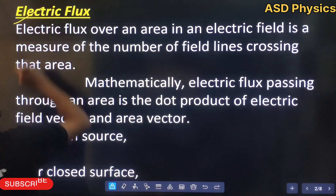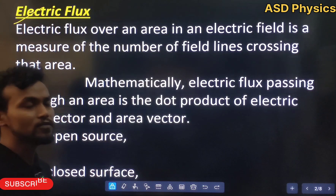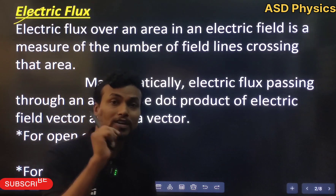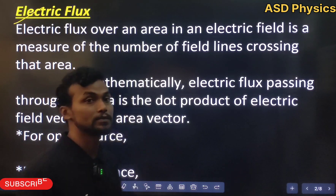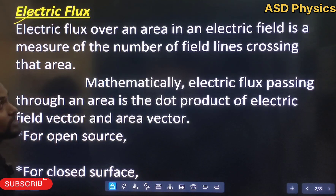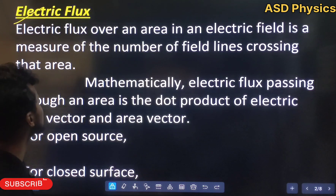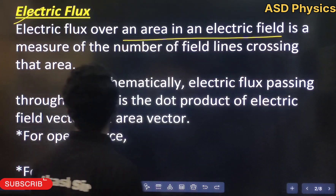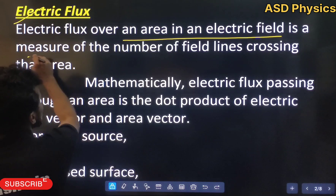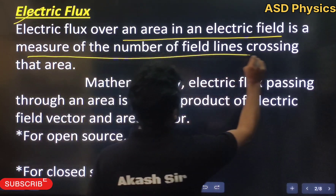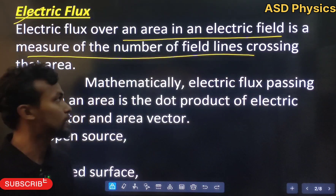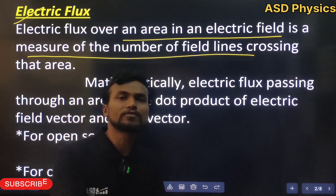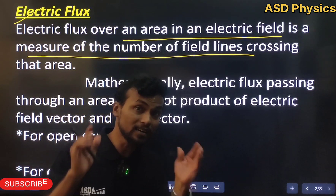The topic is electric flux. We are going to see it from two points of view — one graphically and after that mathematically. Graphically, electric flux over an area in an electric field is a measure of the number of field lines crossing that area. That means if more field lines are crossing the area, the flux will be more.